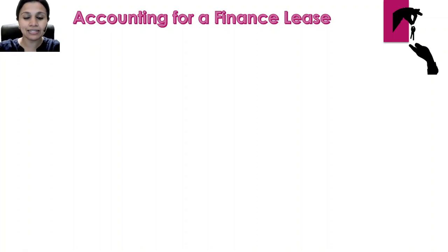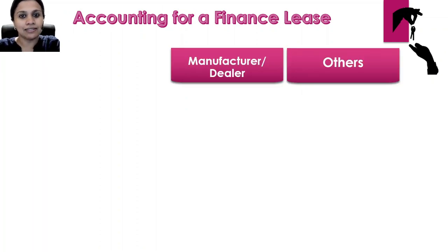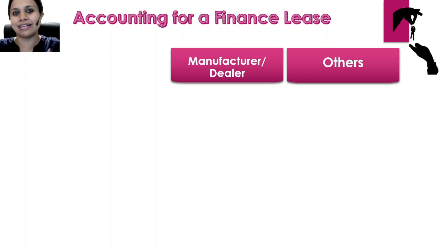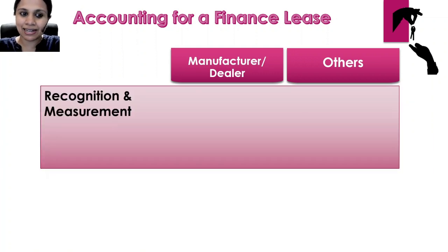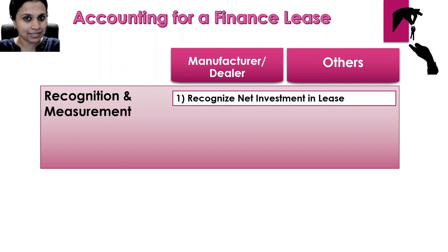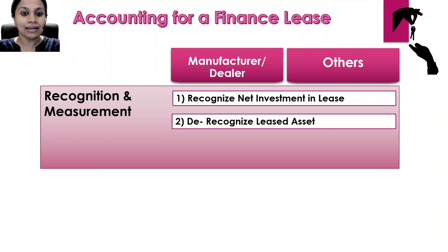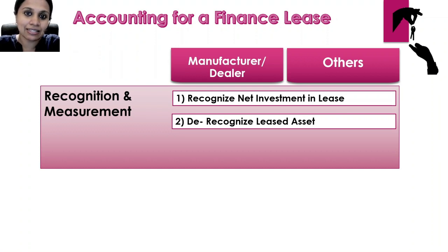Now let's go into accounting for a finance lease. From a finance lease point of view, lessors can be divided into two types: first, manufacturer or dealer lessors, and second, all other lessors. We need this differentiation because the accounting treatment for each is slightly different. For recognition and measurement, both manufacturer dealers and other lessors recognize the lease receivable by debiting net investment in lease. Because we consider the lessee as the owner, the asset is taken out of the books of the lessor — they de-recognize the asset by crediting the carrying value of the leased asset.